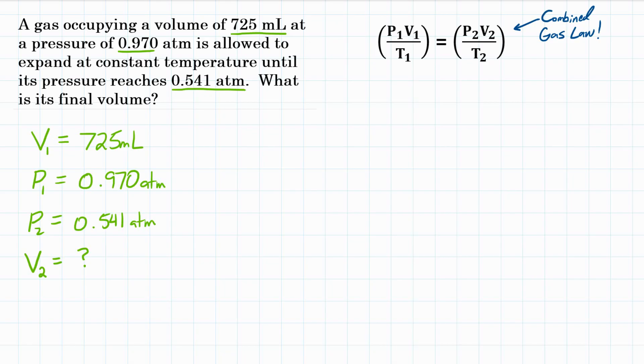So this is a Boyle's Law problem, and that's because we are dealing with pressure and volume changing for a gas at constant temperature. Now, if you don't have Boyle's Law memorized, we can start with the Combined Gas Law. The Combined Gas Law being P1 V1 over T1 equals P2 V2 over T2. Now, if any variables don't change, we can ignore them. The problem says at constant temperature. So since temperature is not changing, we can ignore it in our Combined Gas Law. So if we cross those out, we are left with just P1 V1 equals P2 V2. That is Boyle's Law.